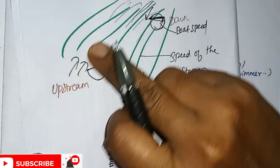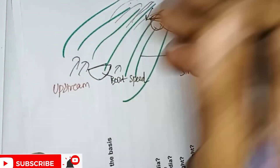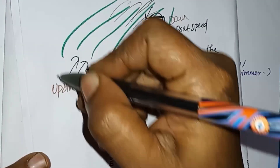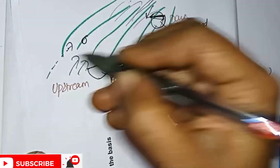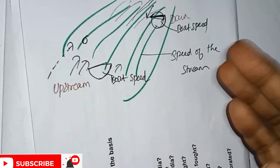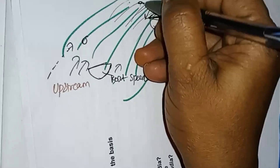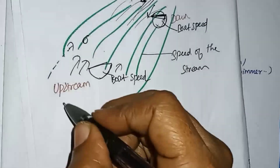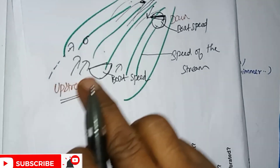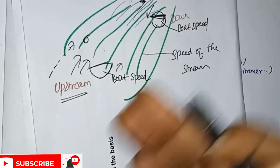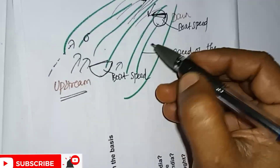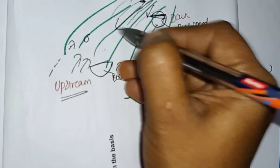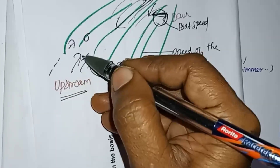One board moves in the opposite direction. Downstream means traveling in the same direction as the stream. Upstream means traveling in the opposite direction to the stream.